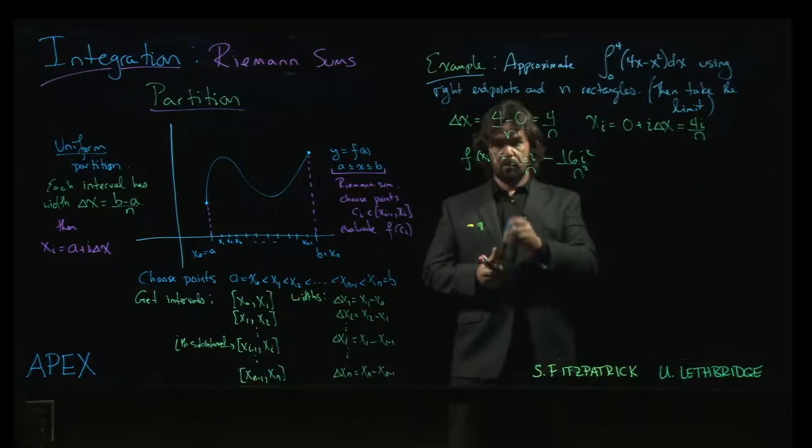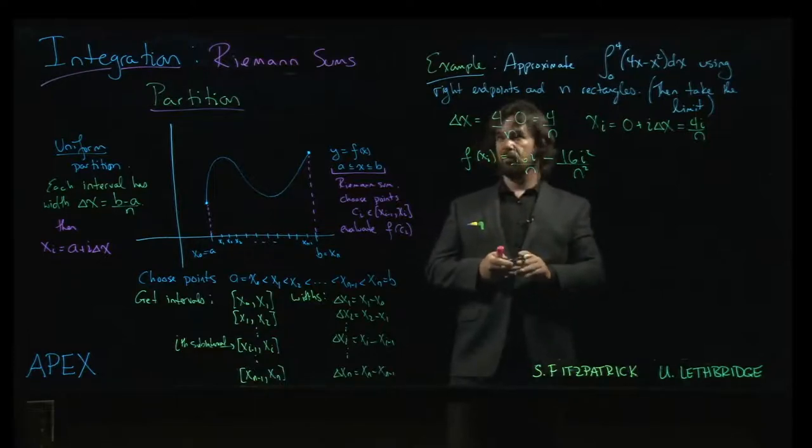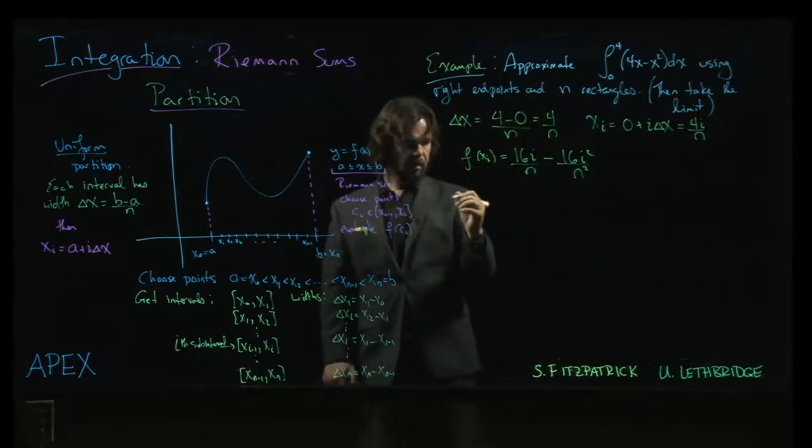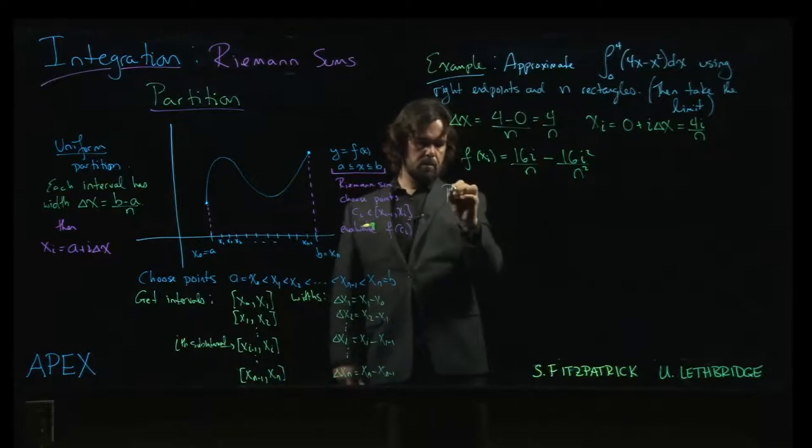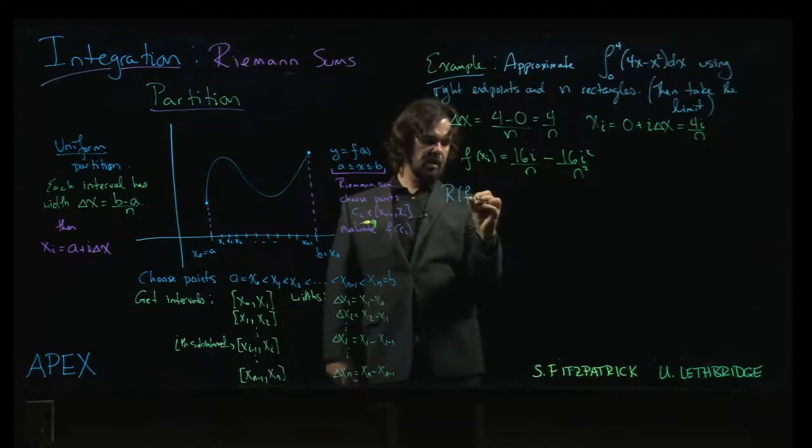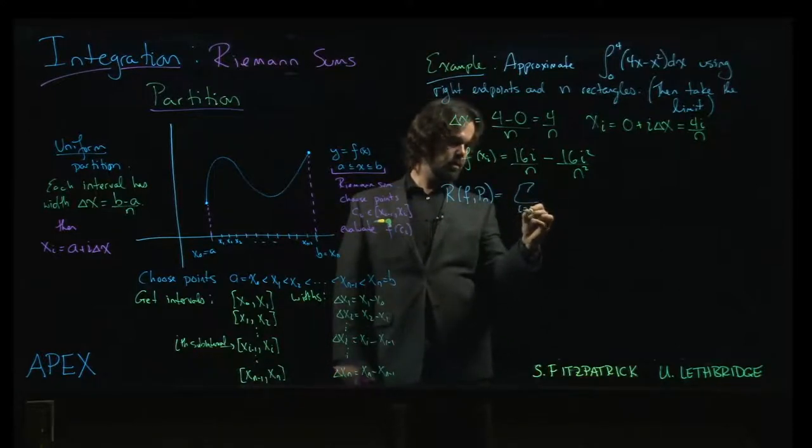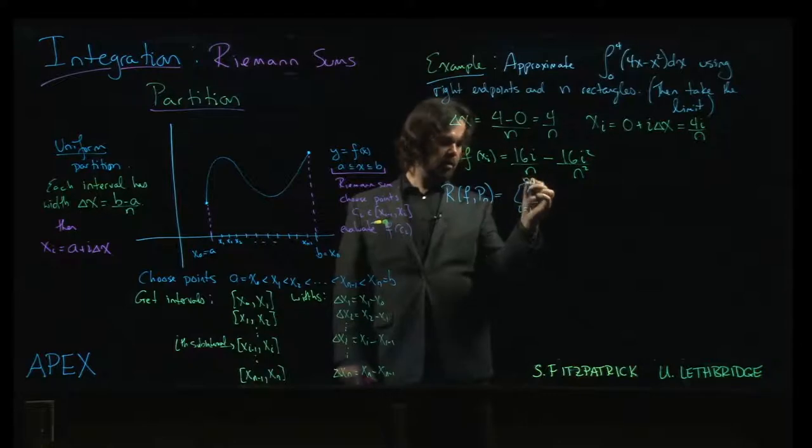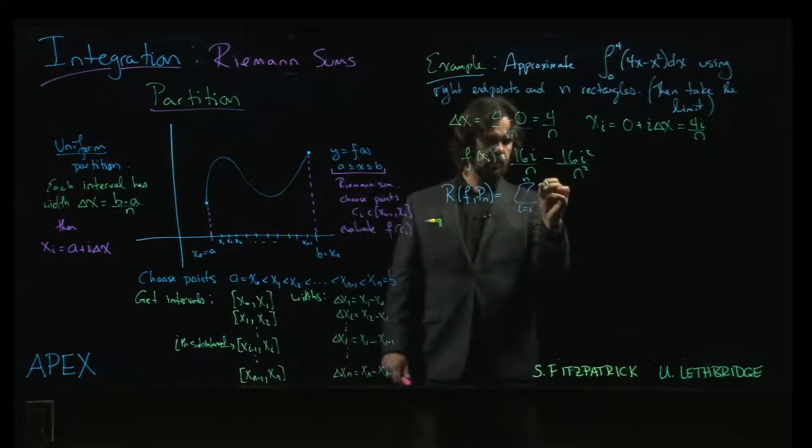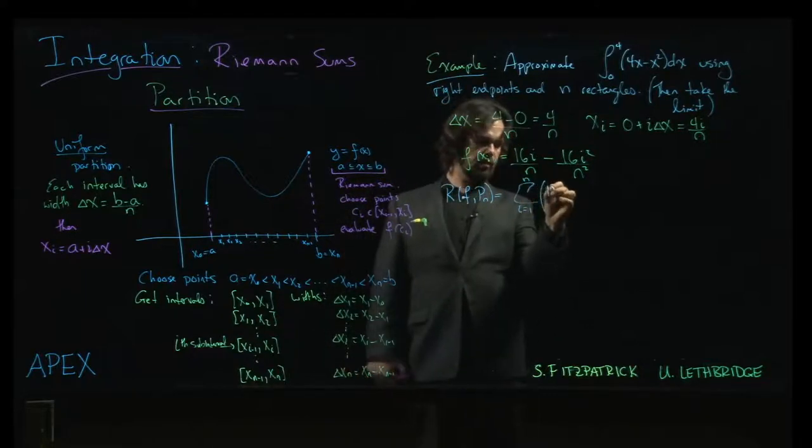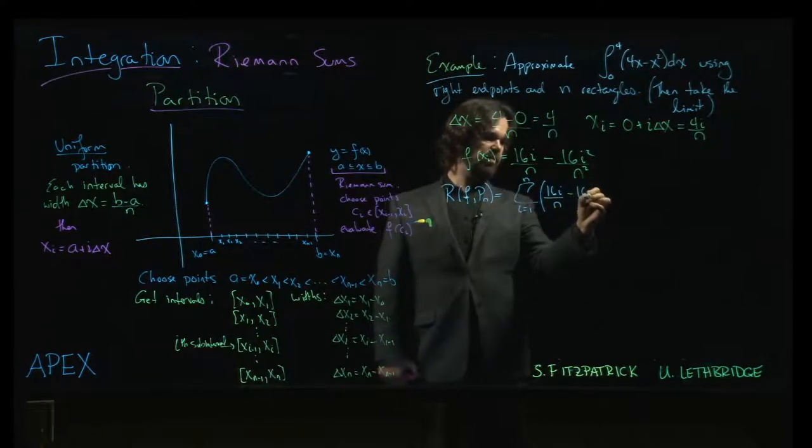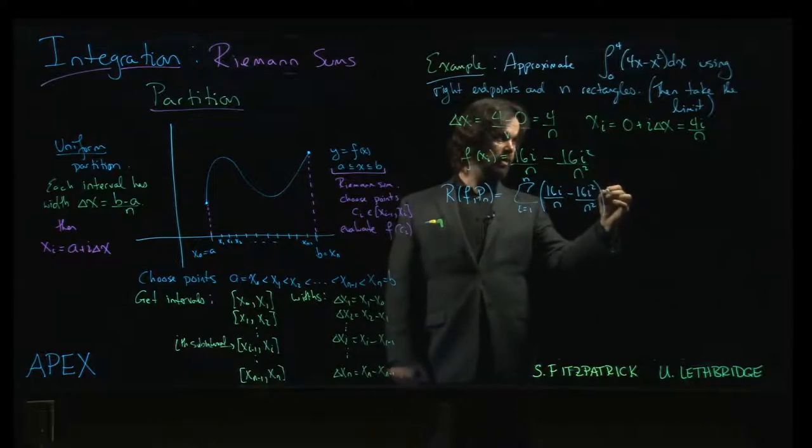Alright, so now we set up our general Riemann sum. So our Riemann sum for this function f, using this uniform partition with n rectangles, is going to be the sum, i going from 1 to n, of f of xi, so 16i over n, minus 16i squared over n squared, times delta x, which is 4 over n.